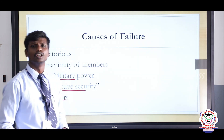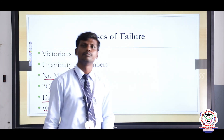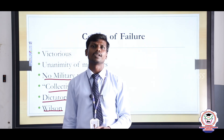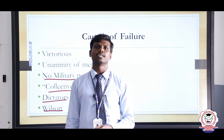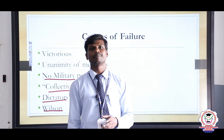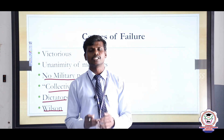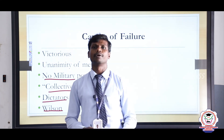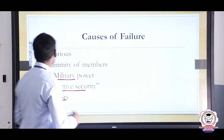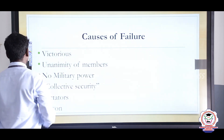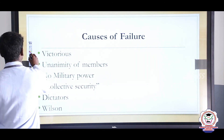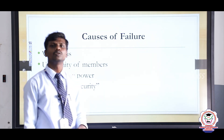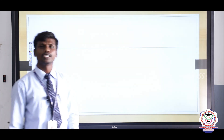The sixth cause was Wilson's failure. President Woodrow Wilson of USA was the man who reasoned for the establishment of the League of Nations. But he could not convince his own country to become a member. It shows that the organisation was like a building standing without a deep foundation.